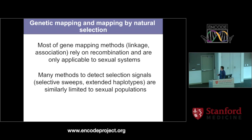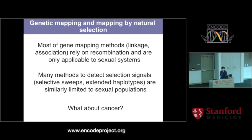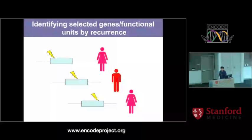The same story applies to methods to detect selection, because what cancer genomics does in its applied wing is trying to find cancer drivers — regions of functional elements, non-coding elements under selection, not mutational hotspots. Most available methods, like selective sweeps and extended haplotypes, are similarly limited to sexual populations; they also use recombination as the vehicle. So for cancer, we have only one way to detect selection in an asexual system, and that is recurrence.